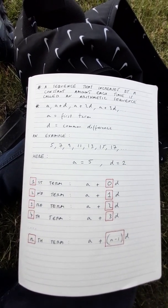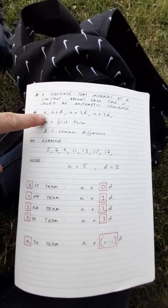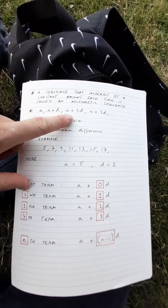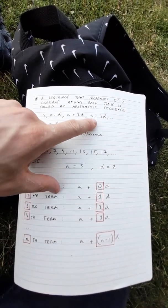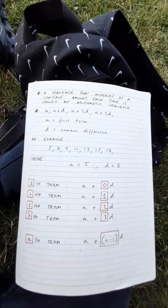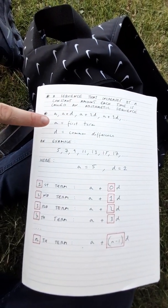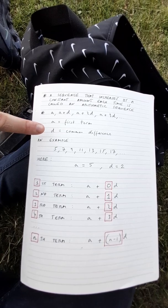Arithmetic sequences are of the form a, a plus d, a plus 2d, a plus 3d, etc., whereby a is the first term and d is the common difference.